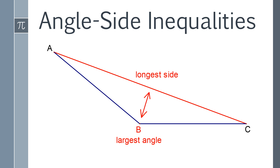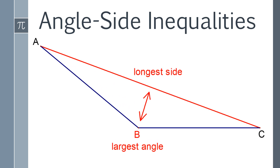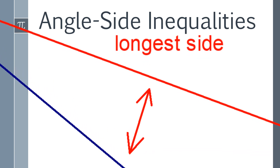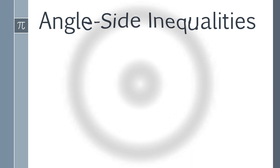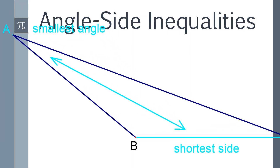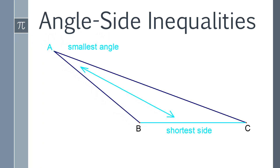Now we start to talk about angle-side inequalities. The longest side of a triangle will always be across from the largest angle. Conversely, the smallest angle will be across from the shortest side of the triangle.